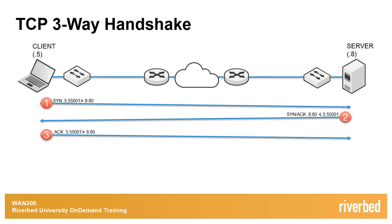The TCP three-way handshake is a critical aspect of most TCP/IP communications, regardless of the upper and lower level protocols in use. Whether it's HTTP, CIFS, or FTP at the top, or gigabit or Wi-Fi at the bottom, you can expect the TCP three-way handshake to be in there always.